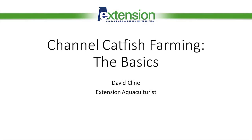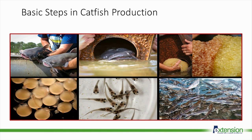The production of any animal crop involves multiple steps. Many of these steps are consistent among different species. These important steps involve all parts of the life cycle.